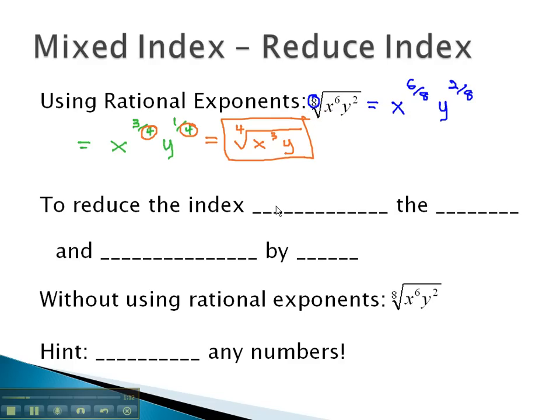This means to reduce the index, we simply have to divide the exponents and the index by the largest possible thing they can all divide by. This is the greatest common factor.